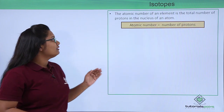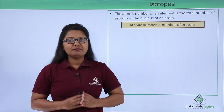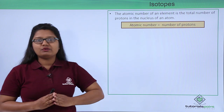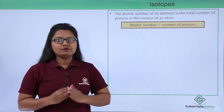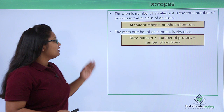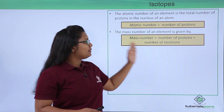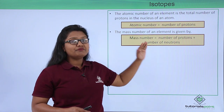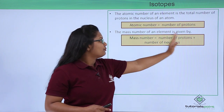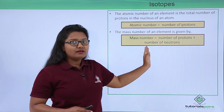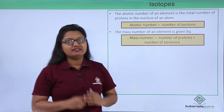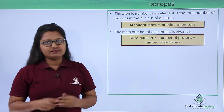It is known that the atomic number of an element represents the total number of protons present inside the nucleus of an atom, and the mass number represents the total number of nucleons — that is the number of protons added up to the total number of neutrons in the nucleus of an atom.